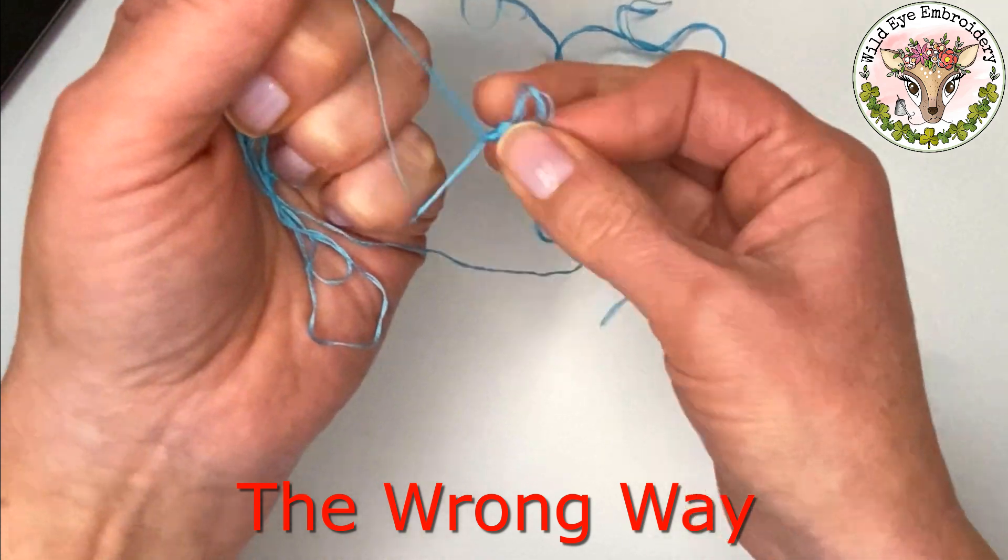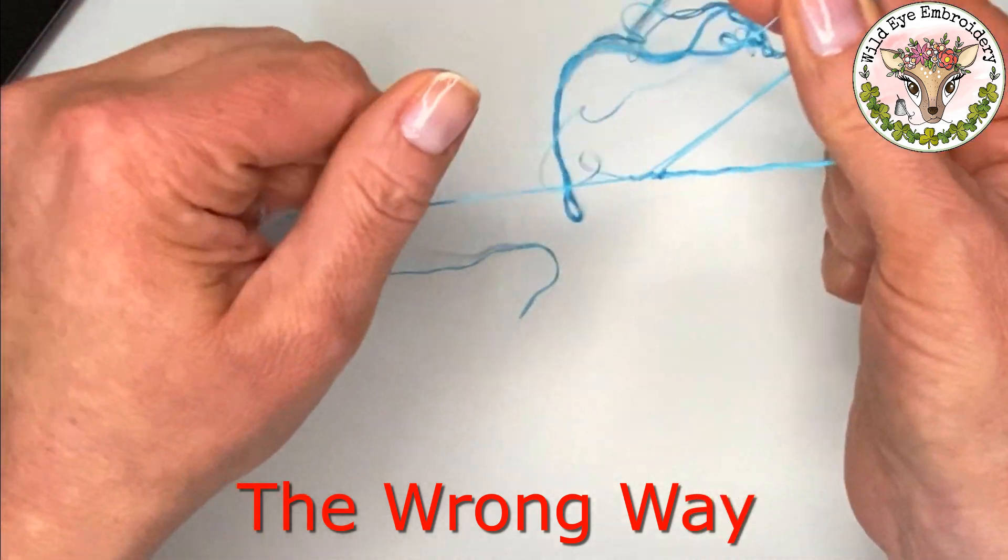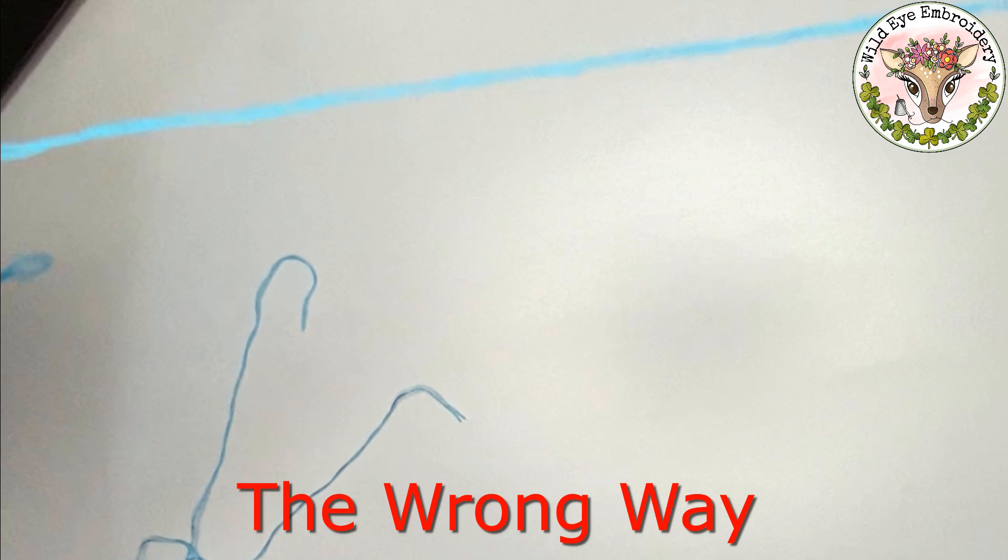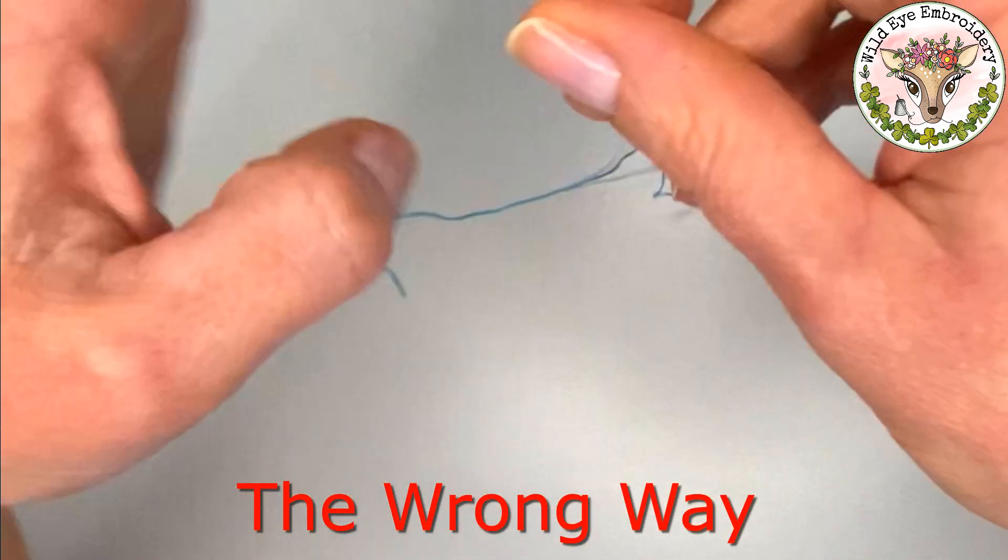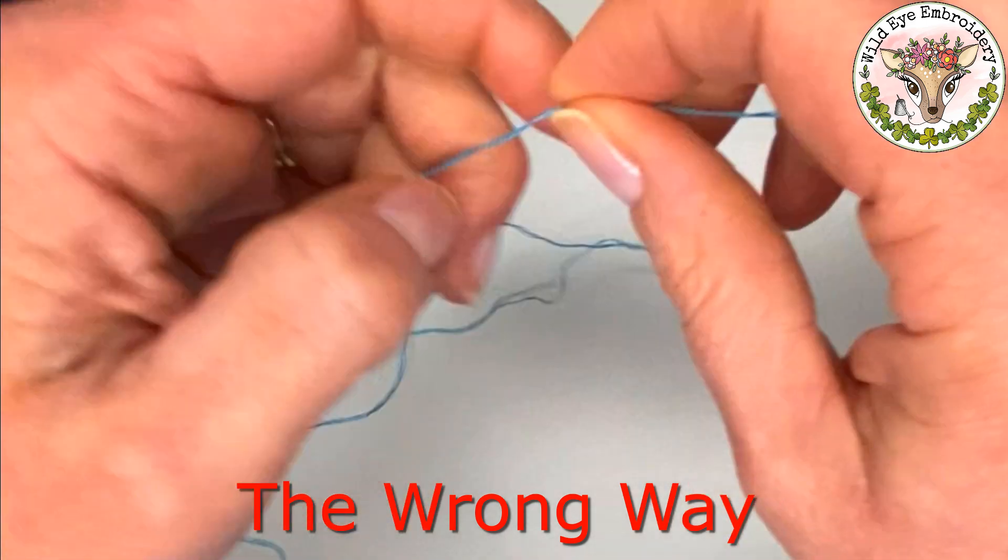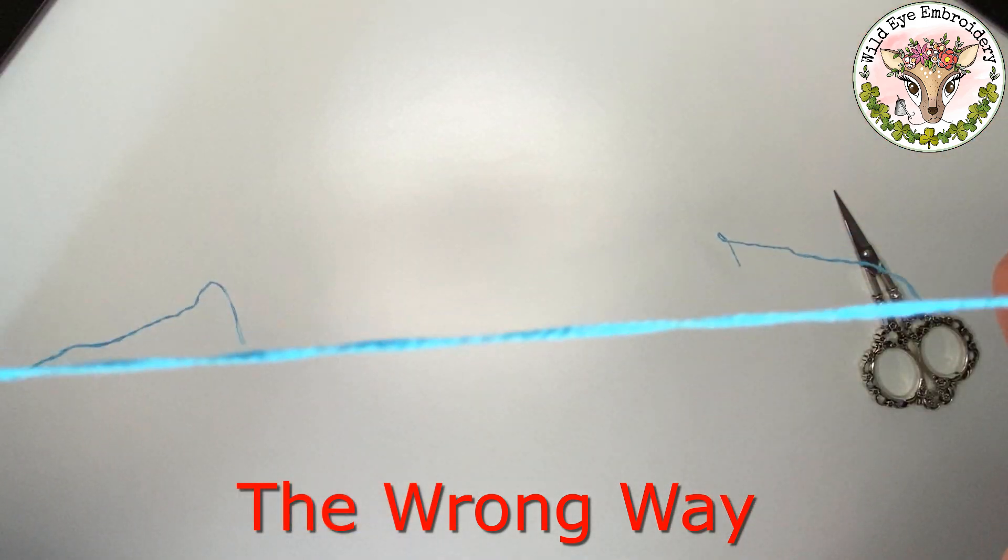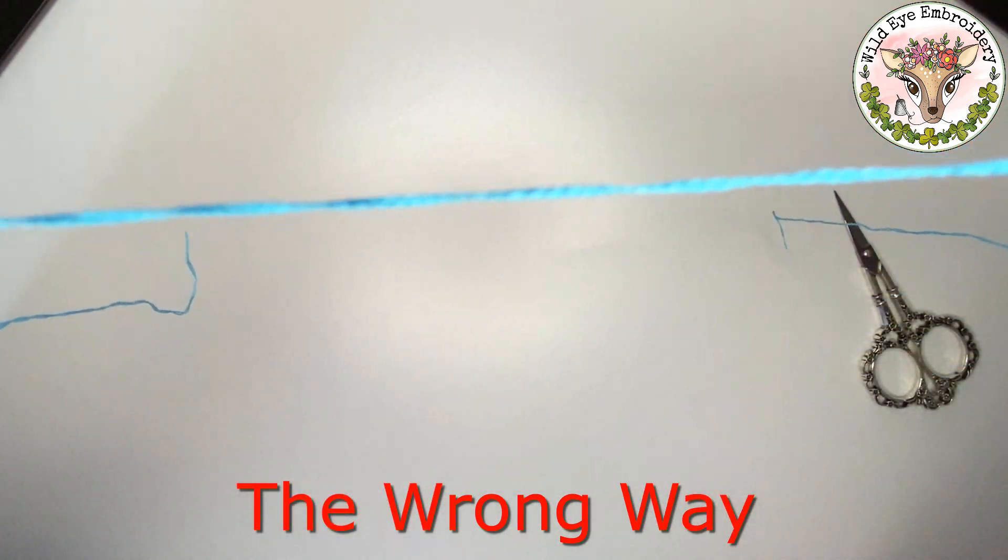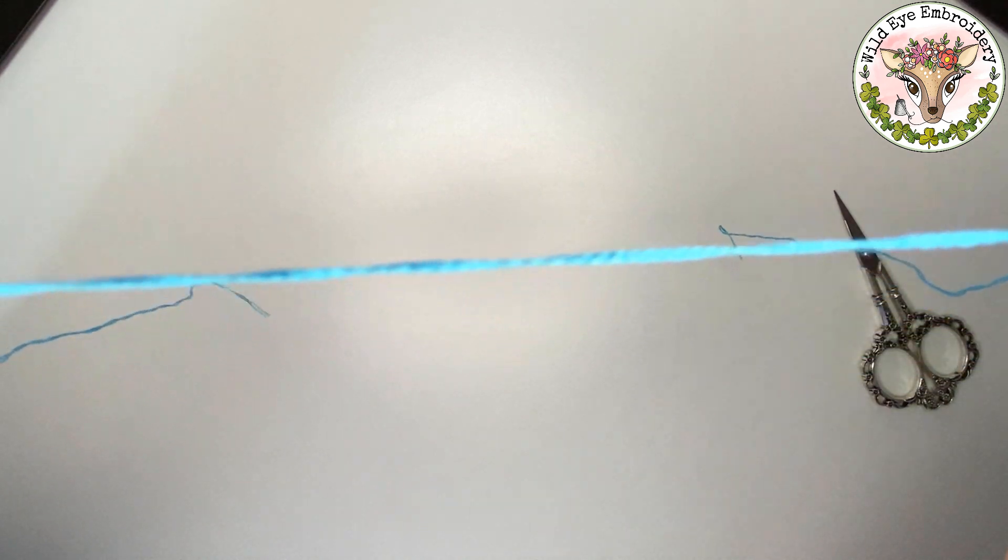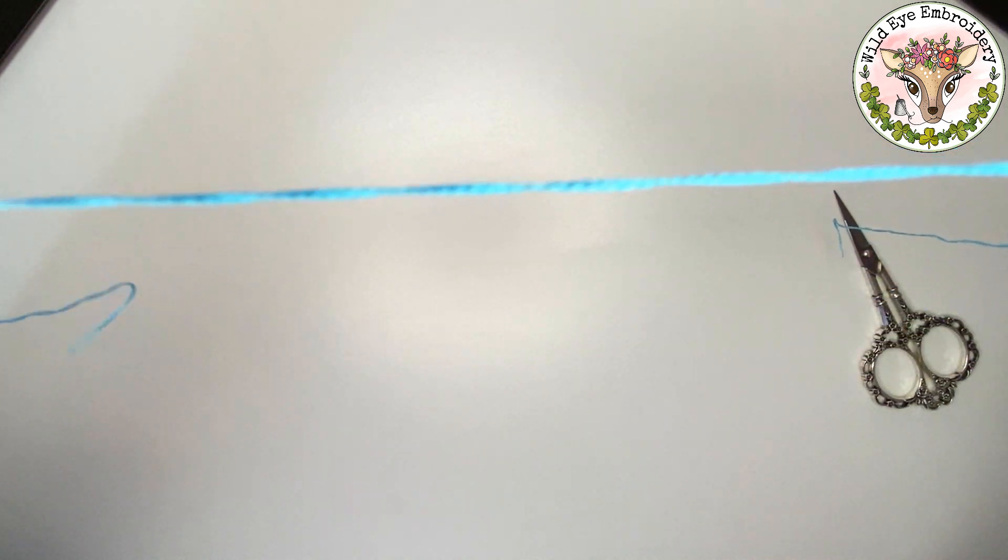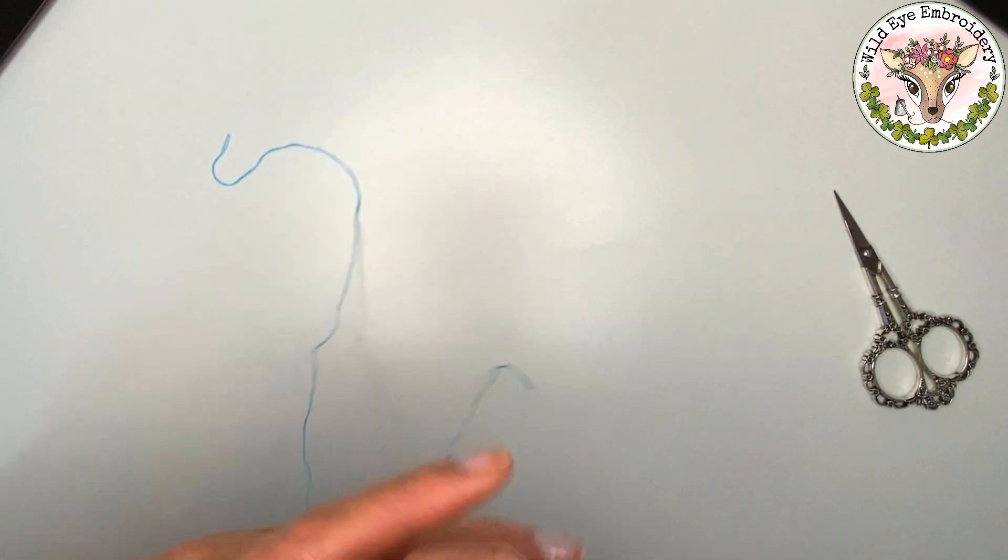I've been quite lucky this time. A lot of times it can knot even more. Now what this also means is the threads don't lie very flat and I will show you that at the end of the tutorial to show you the difference between doing it the wrong way and the right way. You can maybe see there that the thread is quite twisted and this is not ideal. When you're sewing you want it to be nice and flat.